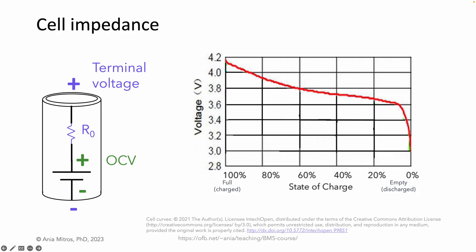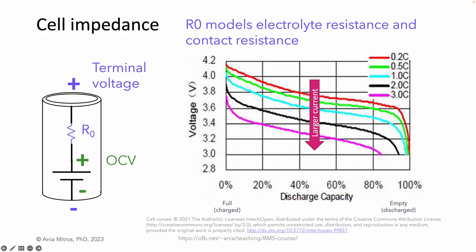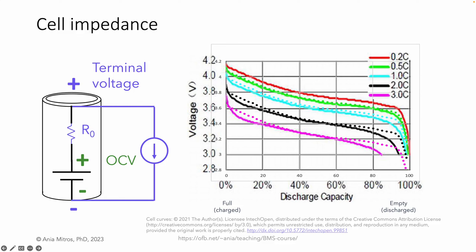Let's look at some data from real cells. This curve is similar to what we saw in the previous slides — voltage as a function of state of charge — and here is how the terminal voltage changes with current. As we apply successively larger currents, the curves shift downwards. The terminal voltage is lower with larger current load, just like in our IR drop calculation. R0 models the electrolyte resistance plus contact resistance. The electrolyte is the medium through which lithium ions flow inside a cell. Contacts are how we connect to the electrodes, and any interface where two materials connect has some resistance. If we take the red curve and shift it down linearly as this model would have us do, we can see that the calculated dotted curves don't quite match the shape of the measured solid curves, but they're close over much of the operating range.